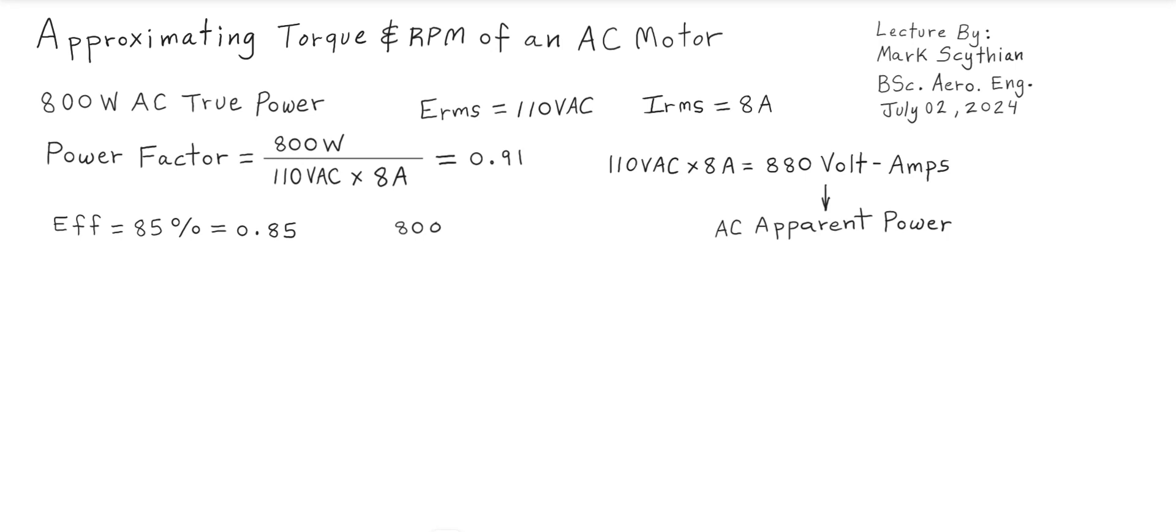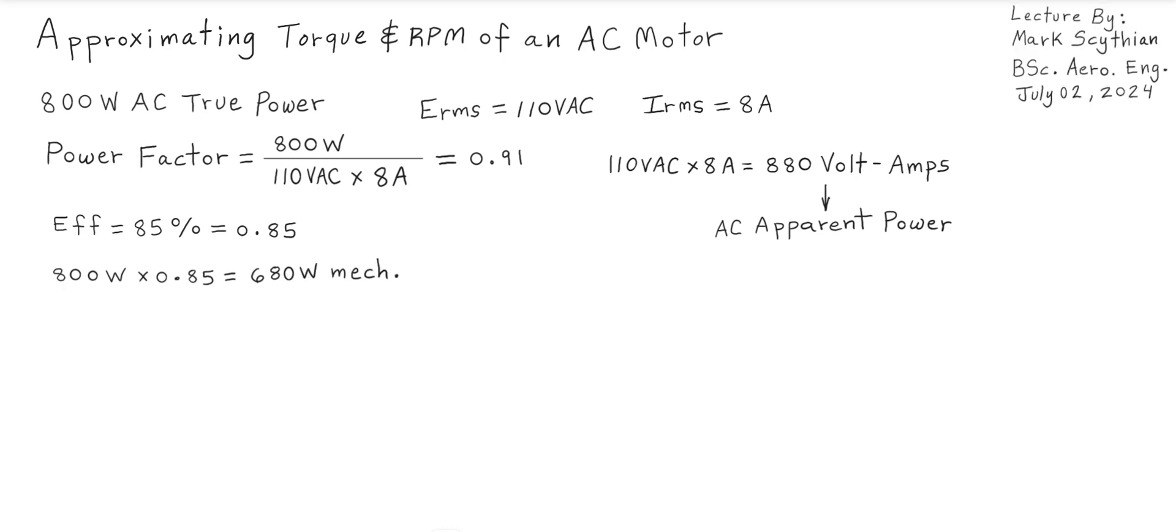So we have an AC electric motor with a power factor of 0.91, and assuming the electric motor has a typical AC electric motor efficiency of 85%, this will give us 680 watts of mechanical power output at the AC electric motor's output drive.